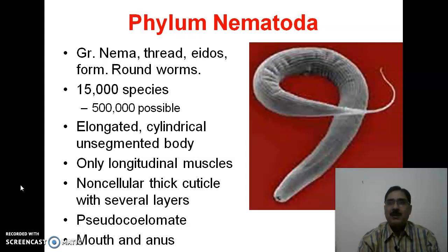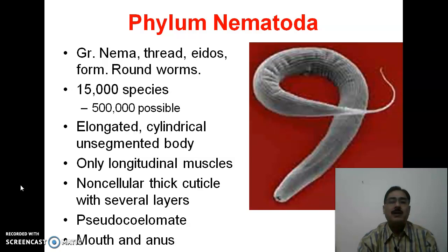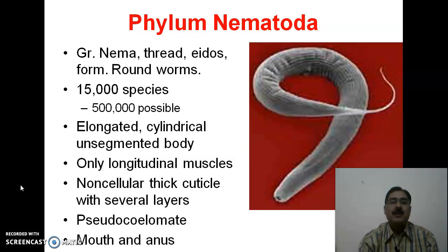As far as the musculature is concerned, below the epidermis — which is generally syncytial or multinucleate — only the longitudinal muscles are present. Whereas in the case of Platyhelminthes, three types of muscles were there: circular, longitudinal, and oblique. The outermost covering of the body has a non-cellular thick cuticle which is generally several layers thick.